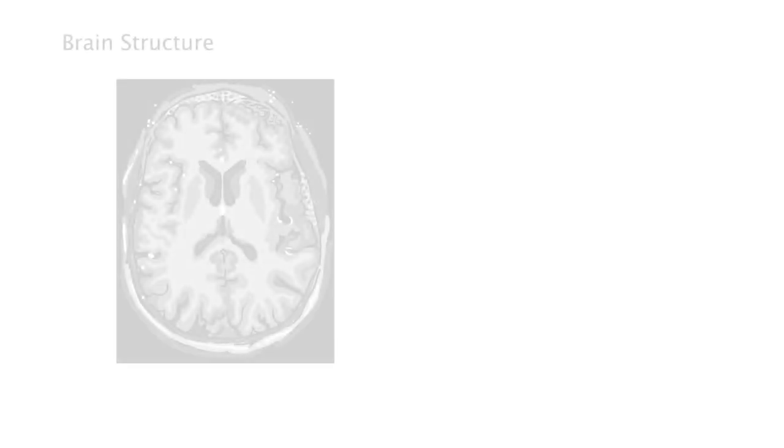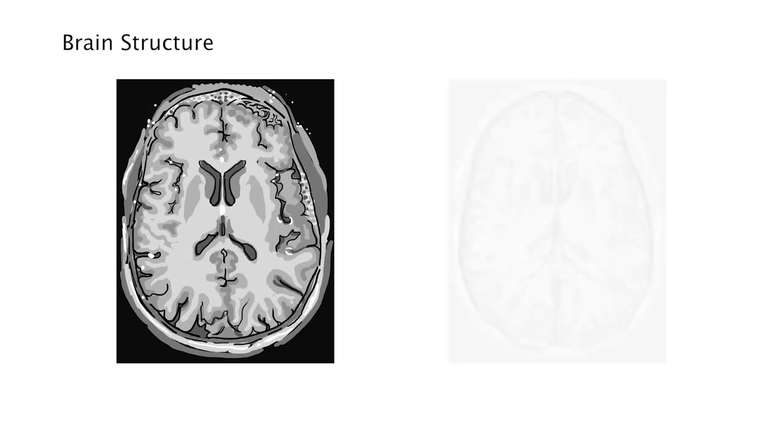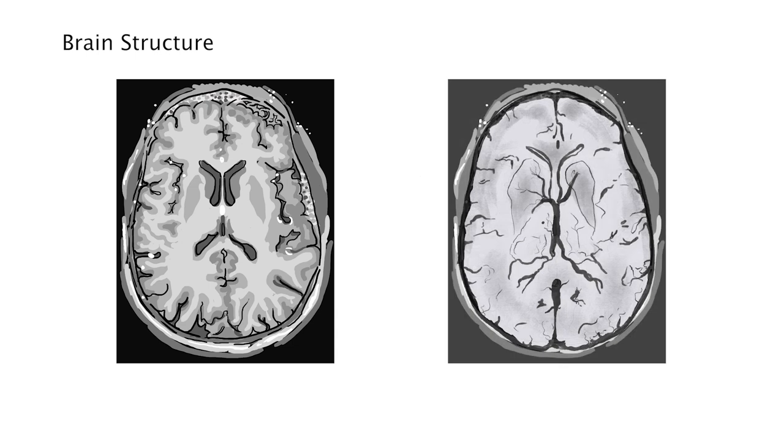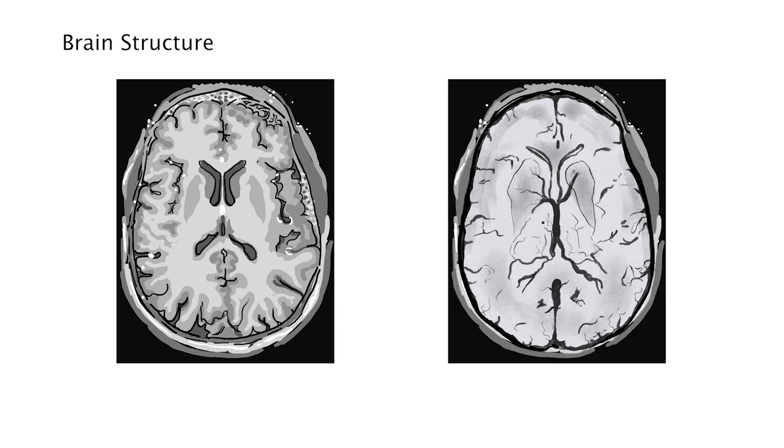These two examples show how we can visualize different structures using MRI. This is very useful for research. For example, we can use the first image to compare the thickness of grey matter for different groups of people. Or, in the second image, we can look for abnormalities in the blood vessels.